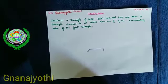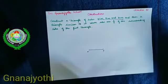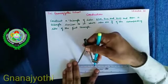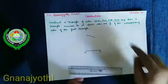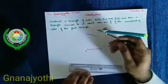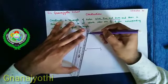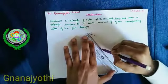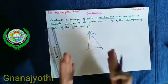Now with the help of the compass, we will cut arcs for 5 cm and 6 cm. Take 5 cm first, keep it on point X and cut an arc. Now take 6 cm with the help of compass, place it on Y and cut this arc. Now let us join them. I will call this point Z. So this is triangle XYZ — this is the first triangle.